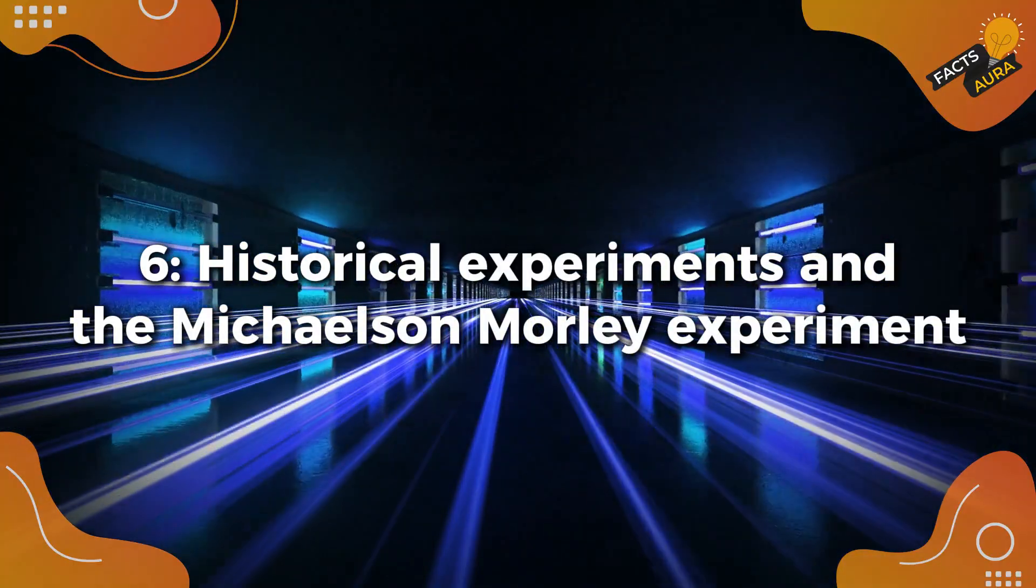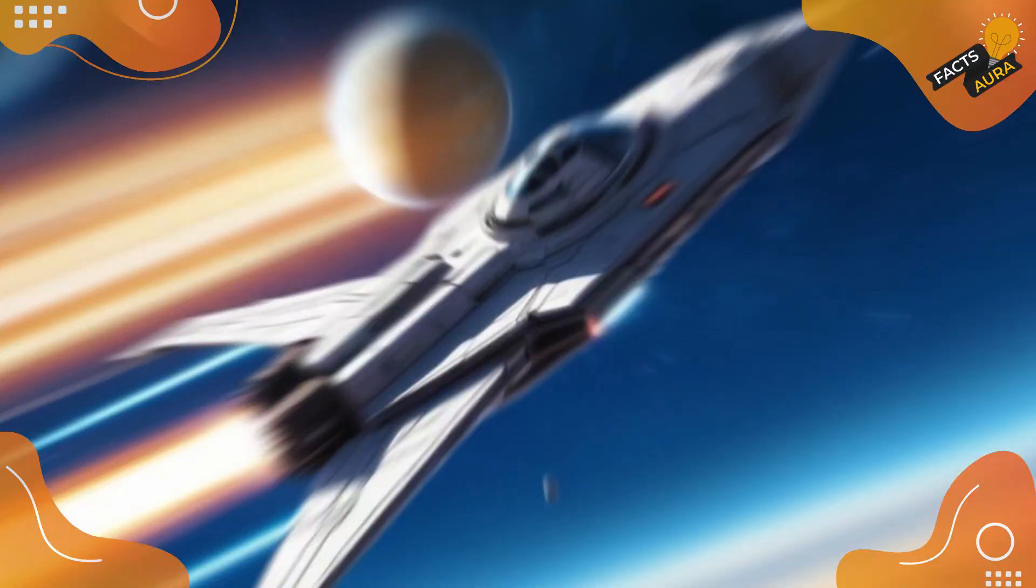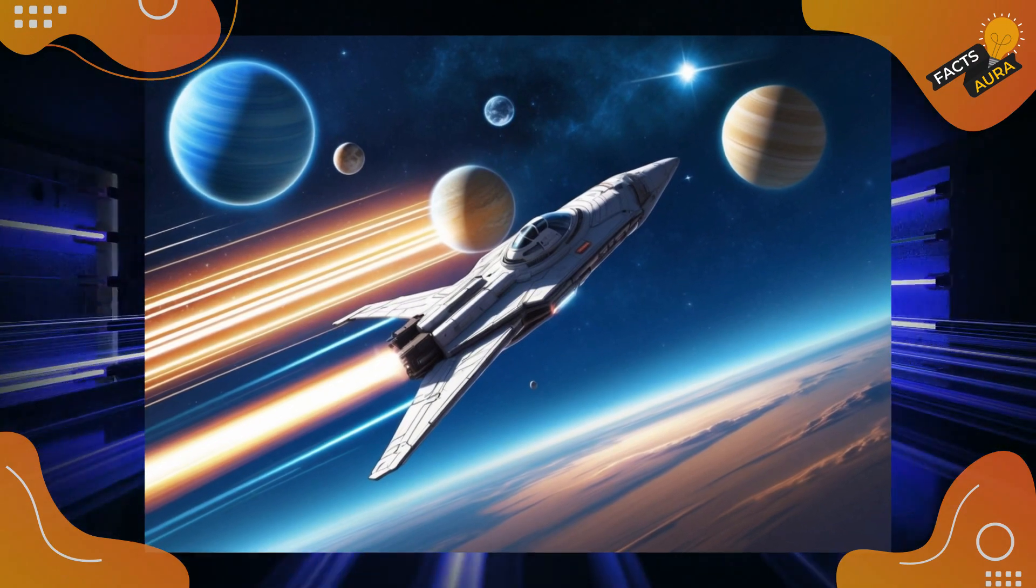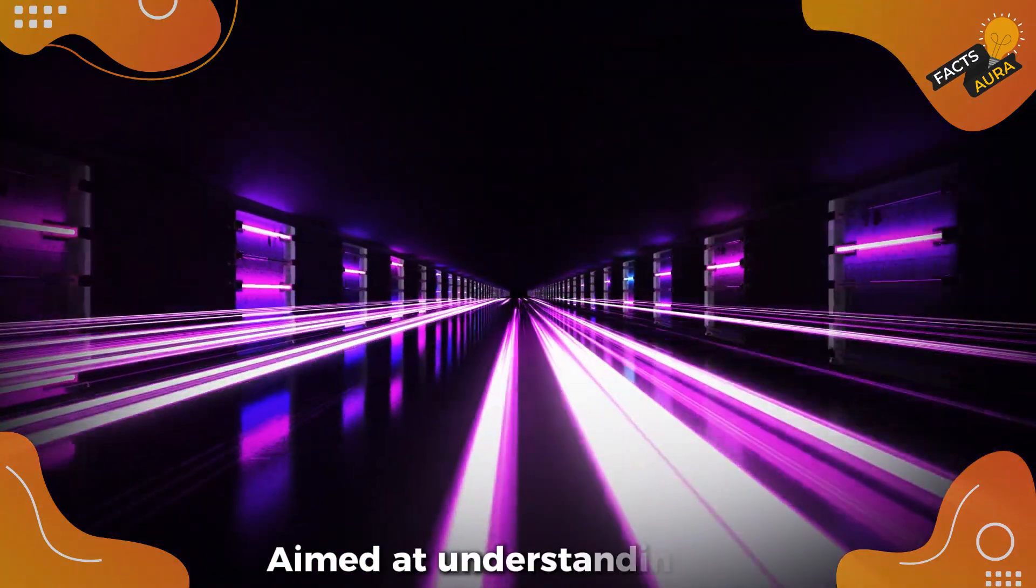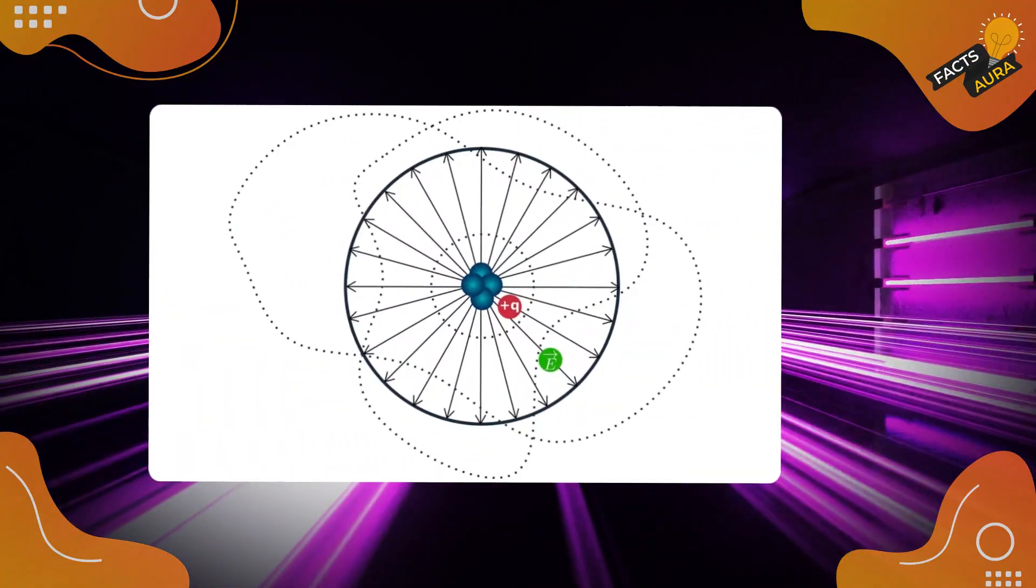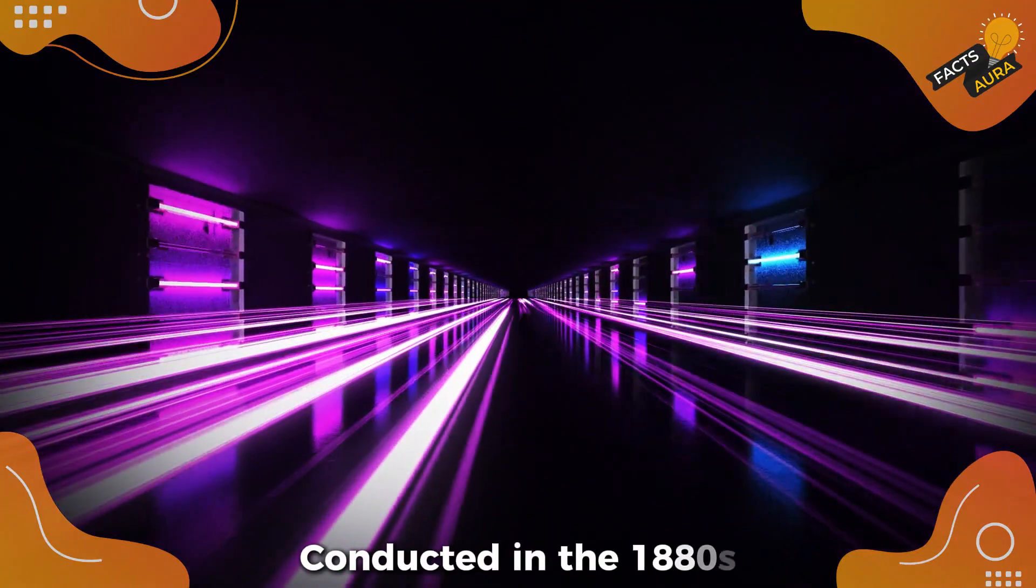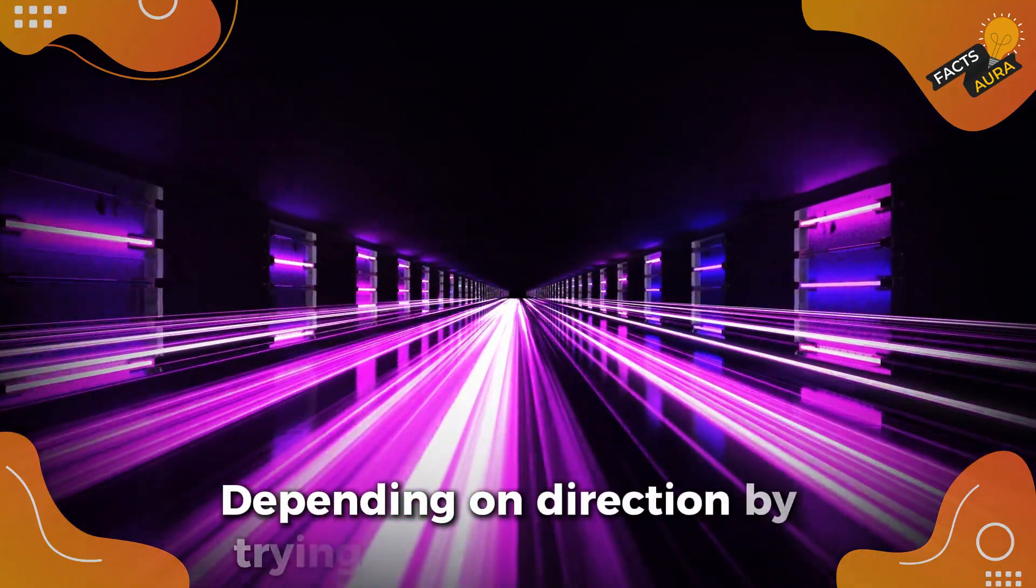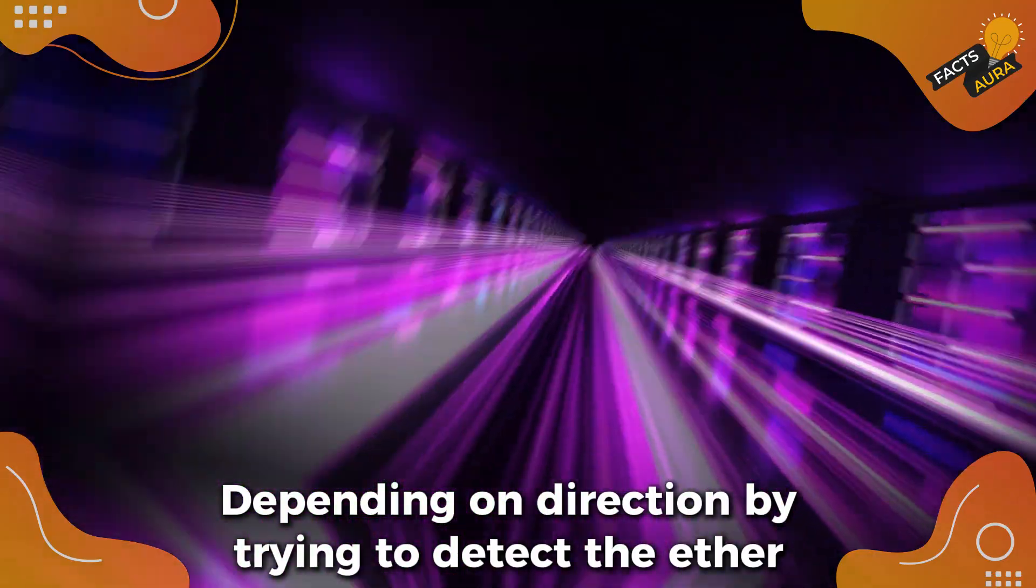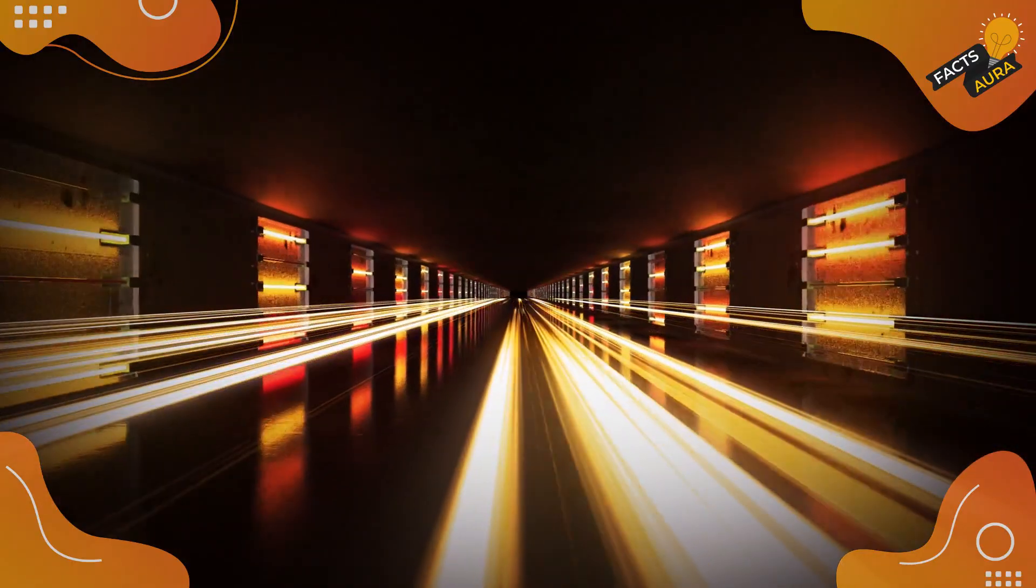Historical experiments and the Michelson-Morley experiment. Physicists have been fascinated with measuring light's speed for centuries. One of the most famous experiments aimed at understanding this was the Michelson-Morley experiment. Conducted in the 1880s, this experiment tested if light speed changed depending on direction by trying to detect the ether, a theoretical medium through which light was thought to travel.